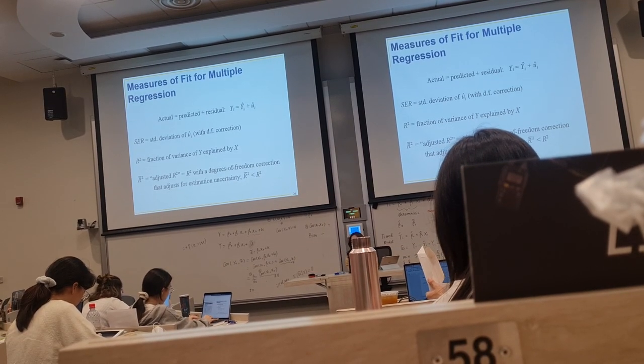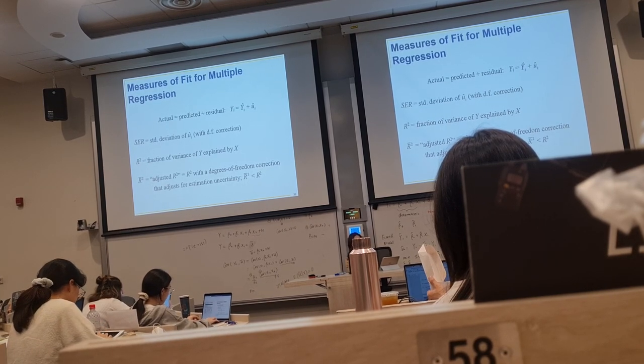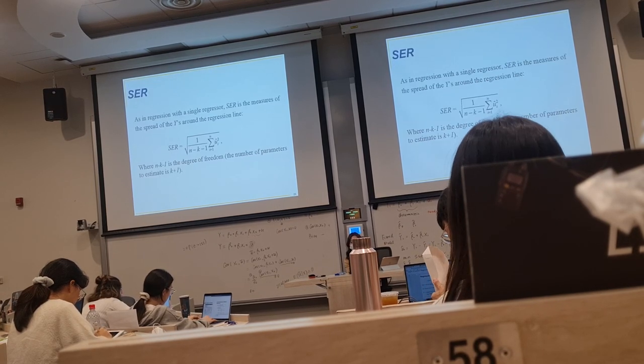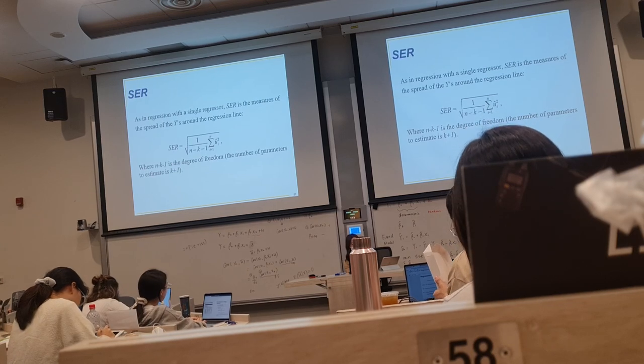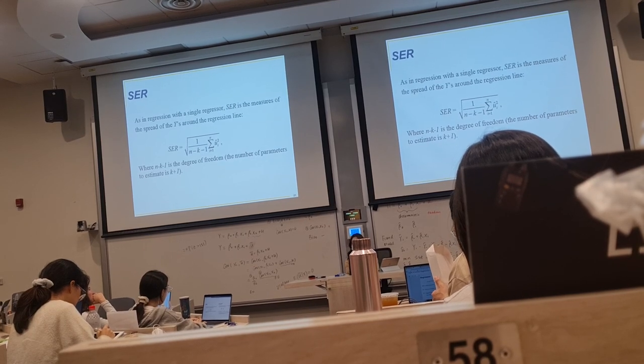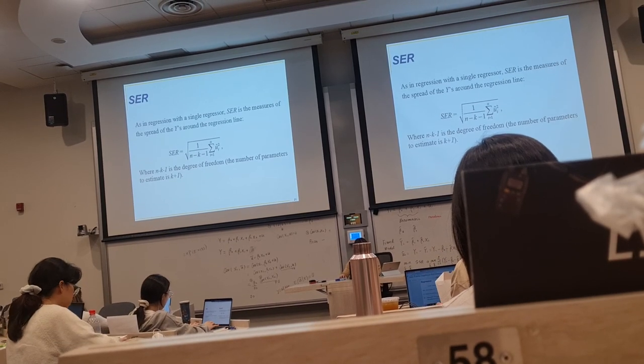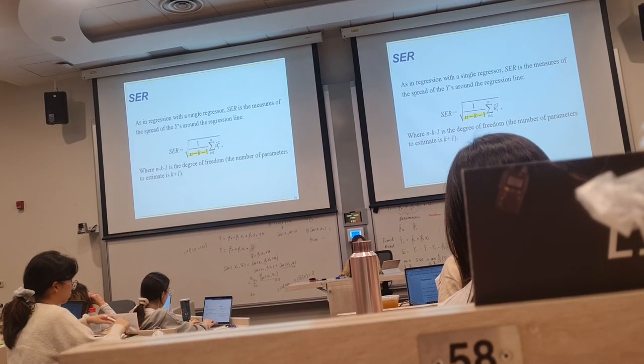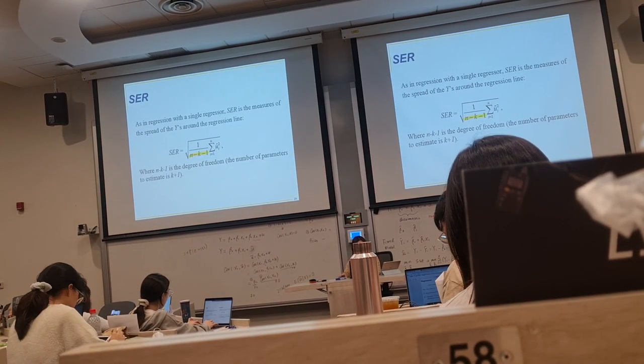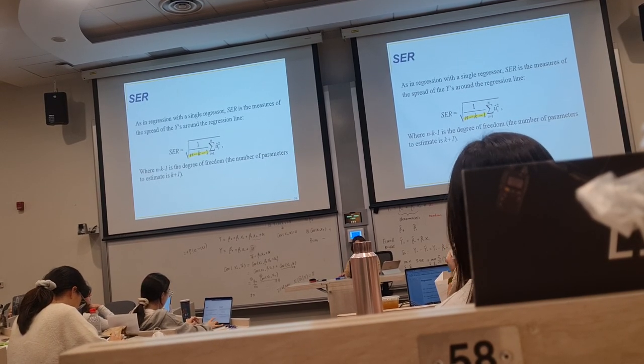And for multiple regression, it is still okay to use SER and OLS to measure how well the model fits the data. So the SER is about the sum of squared residuals. In this part, it is not m minus 2 anymore. It is m minus k minus 1, and k is the number of regressors in the model.